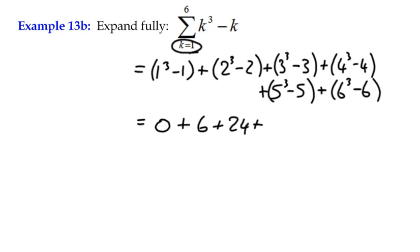4 cubed is 64, minus 4 is 60. 125 minus 5 is plus 120. And 216 minus 6 is plus 210. So that would be the expansion of that series there.